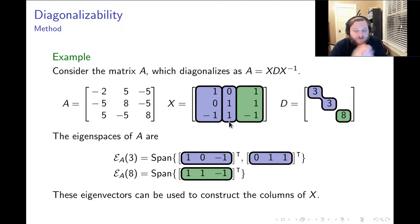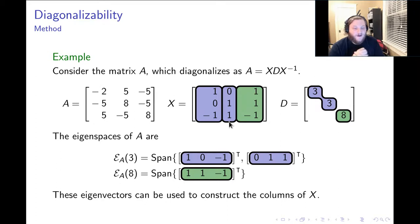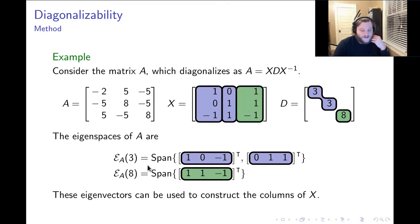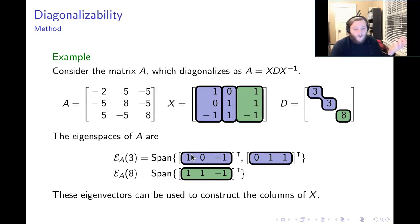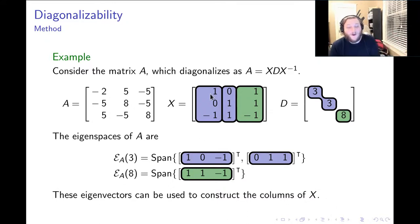You can see why it's so important for the sum of the geometric multiplicities to equal the size of the matrix. If that were not the case — say for lambda equals 3 we only had one eigenvector instead of two — we would put all of our eigenvectors into X, and X wouldn't end up being a square matrix, so we couldn't invert X.